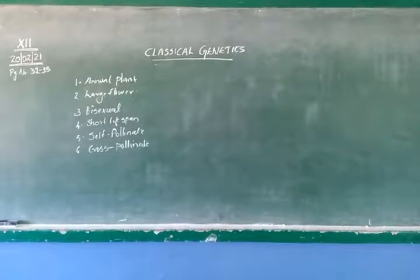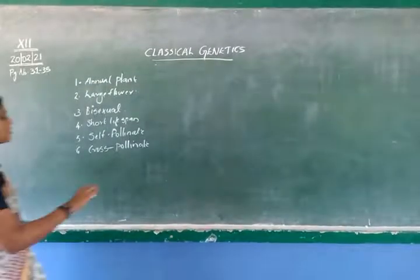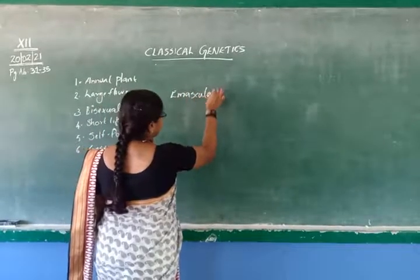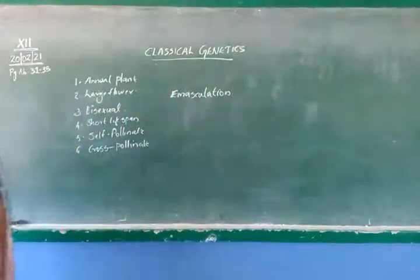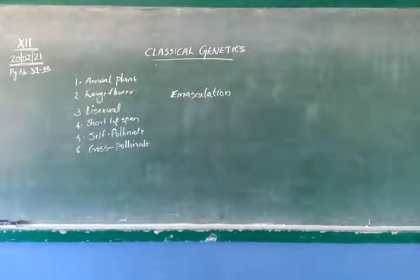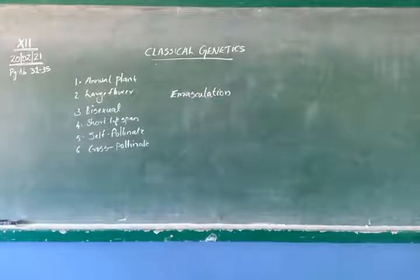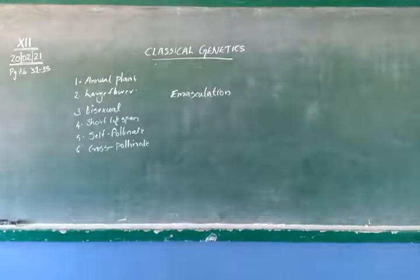What is emasculation? Emasculation is the removal of anthers from a flower. Before conducting experiments, Mendel removed the anthers from the flowers. Why? To avoid self-pollination. Mendel removed the anthers from the flower to avoid self-pollination.